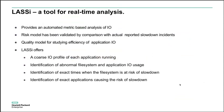Lassie provides a tool for Archer — not real-time analysis yet, but we plan to move to real-time. It automates daily metric-based analysis of IO. We use a risk-based model to identify slowdown instances and a quality model to study the efficiency of the application. Lassie also offers a coarse IO profile of each application running without requiring any profiling instrumentation — we collect data at an interval of three minutes. Using Lassie, we can identify abnormal file system usage — for example, there was an application creating a million directories per second, which we could easily identify. We can also identify exactly the times at which the file system is at risk of slowdown and exactly which application is causing it.